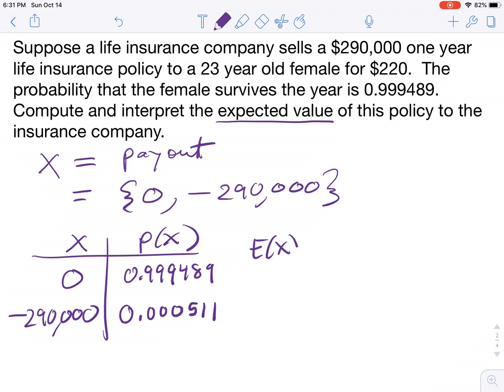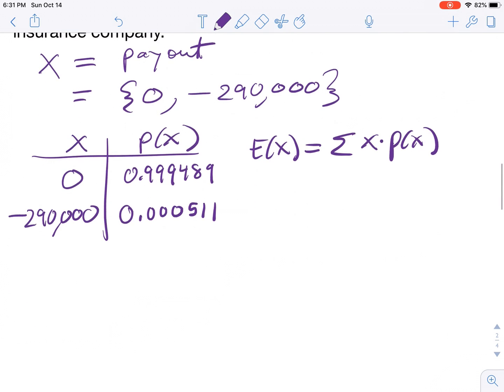The expected value equals the sum of the products, x times p(x). You can do that on the calculator, but in this problem, there's not a long list. So the expected value is zero times 0.999489. We don't need to put that in the calculator because that's zero.